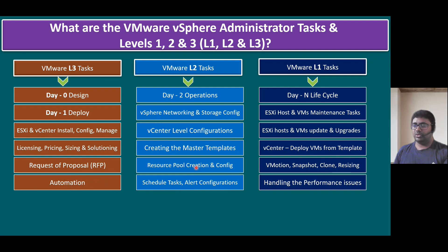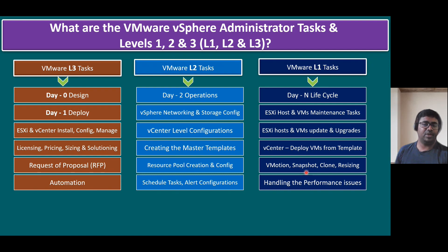The L2 team focuses on resource pool creation and configuration. The L1 team handles tasks like vMotion and virtual machine snapshots — normally a snapshot is created before applying patches. Whenever a customer plans an OS-level upgrade, it is recommended to create an offline clone copy. L1 also handles regular requests such as CPU increase, memory increase, or disk increase. This type of resizing is handled by the L1 team.